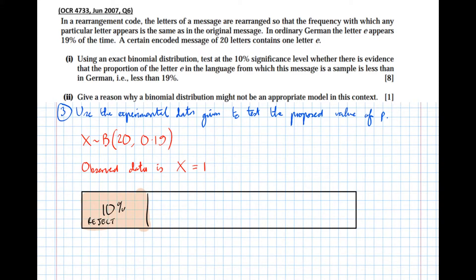So we need to find out whether our observation of one out of 20 of the letters being e cumulatively is in the bottom 10 percent. Now we can do this by seeing how much probability is to the left of one. Probability that X is less than or equal to one, and that's a way of testing whether it's in the bottom 10 percent and we'll see why in just a second. So X is less than or equal to one, so if I get the calculator ready.